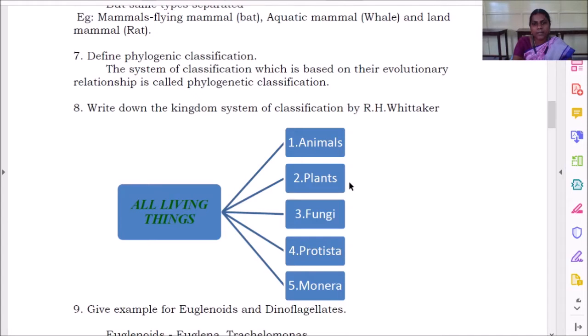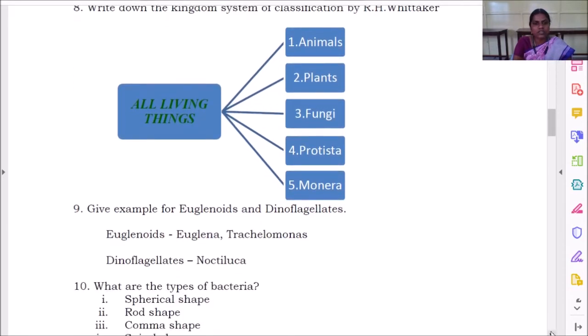What are they? Animals, plants, fungi, protista, and monera. Totally five. Give example for euglenoids and dinoflagellates. We had studied these things.